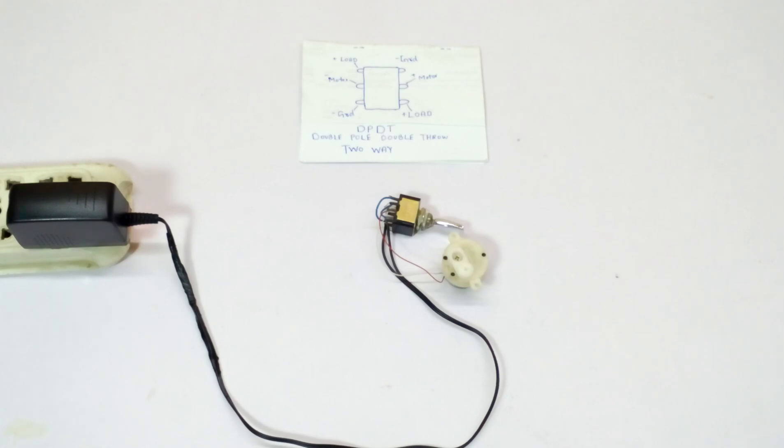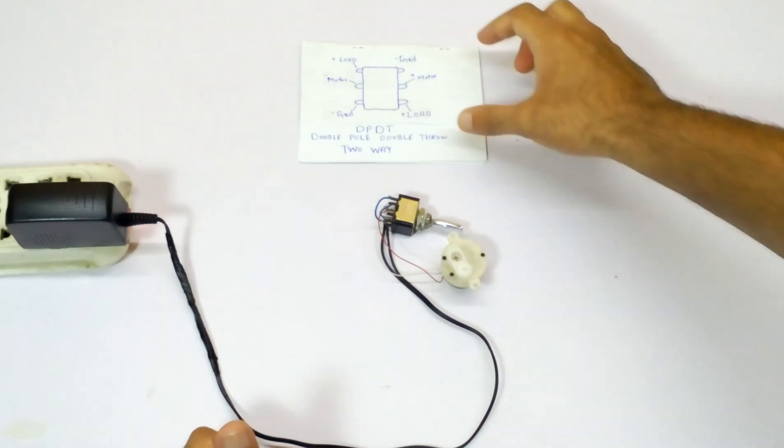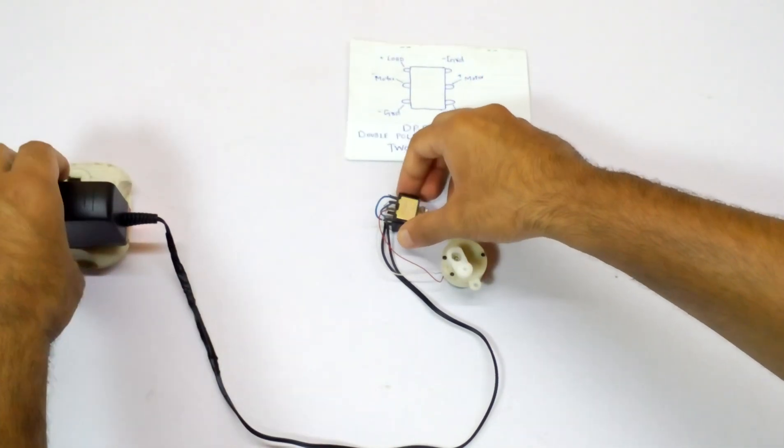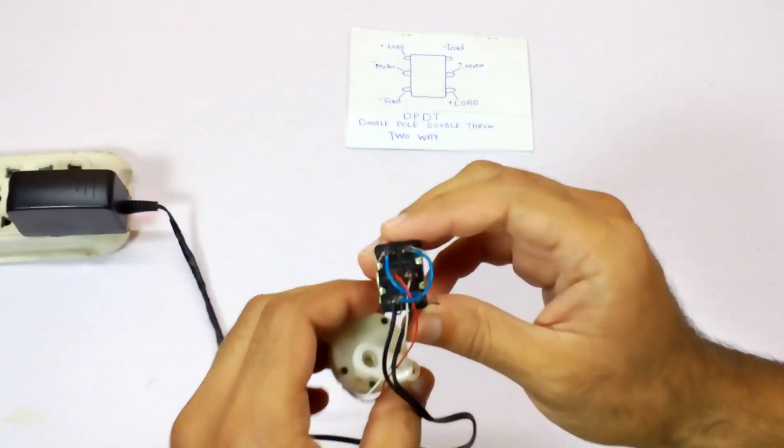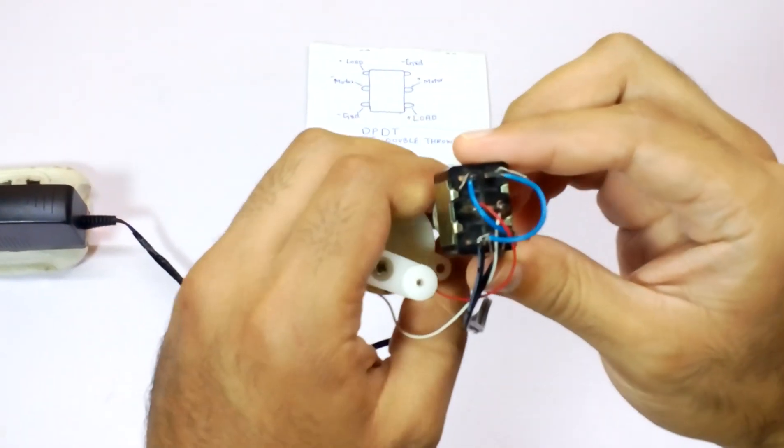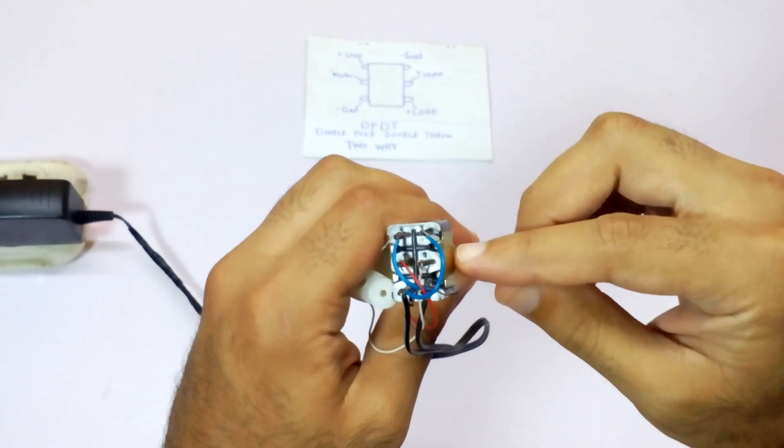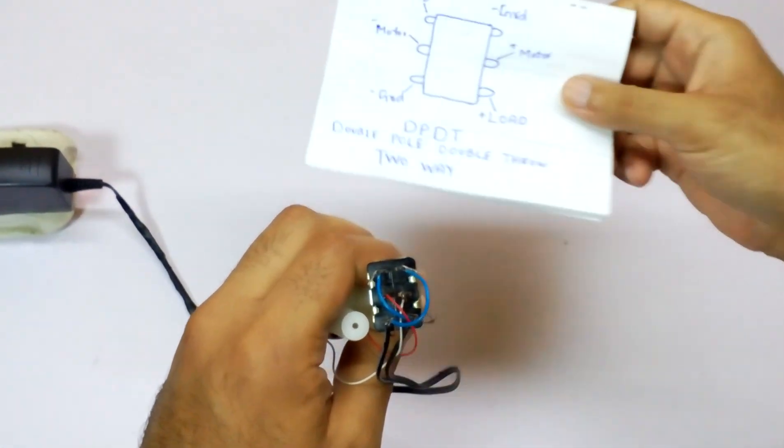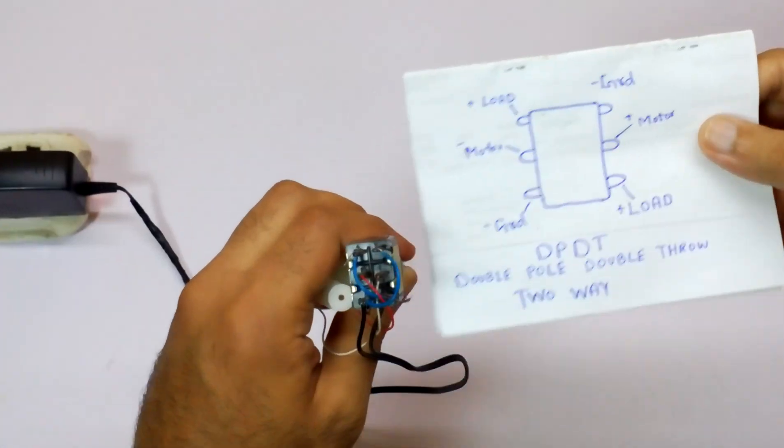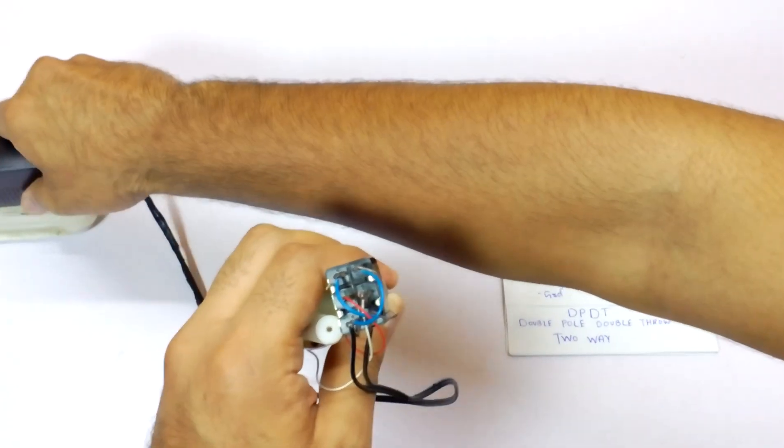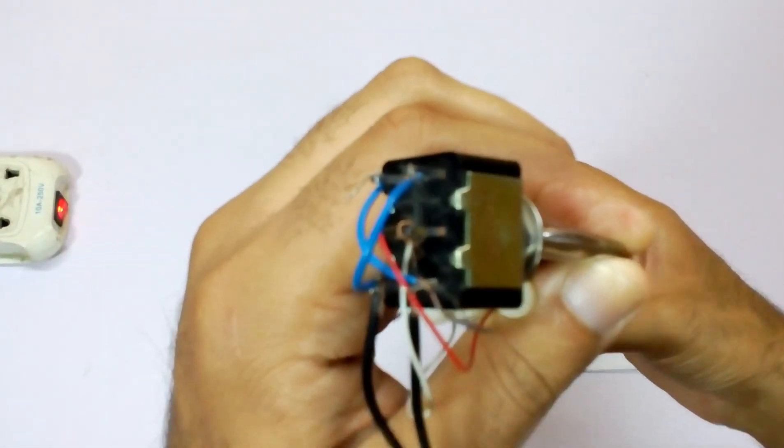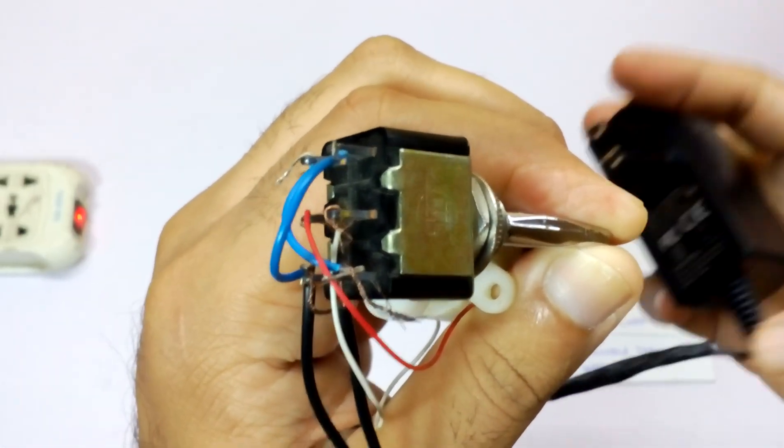This switch is going to be used for forwarding and reversing any kind of DC motor. On this circuit, we have six pins. I can show you—we have six pins. On the center pins I connected the motor, which is going to get power from these parts.